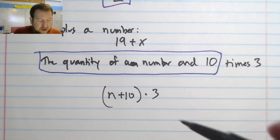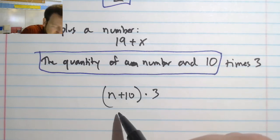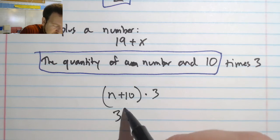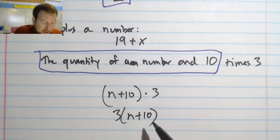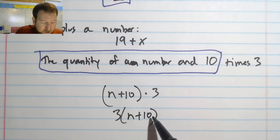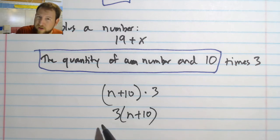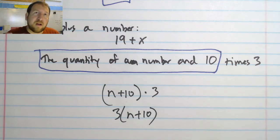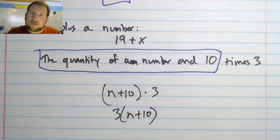And because it's the quantity together times 3, I'm going to put them in parentheses and then multiply by 3. In fact, if I want to simplify this and write it how a mathematician would write it, I would probably write it like this: 3(n + 10). And this represents the quantity of a number and 10 times 3, because it doesn't matter which side I put the 3 on. According to my PEMDAS or my order of operations, I'll always do what's in the parentheses first, so the actual order that I write it in does not matter.